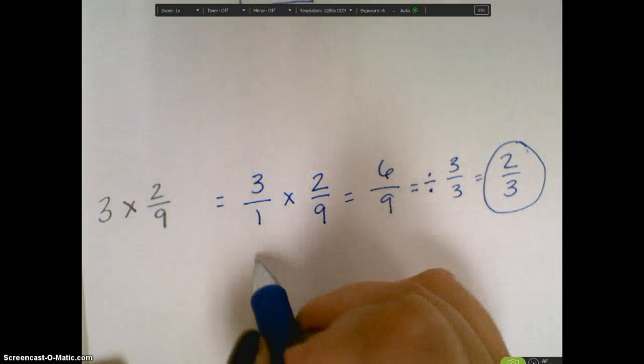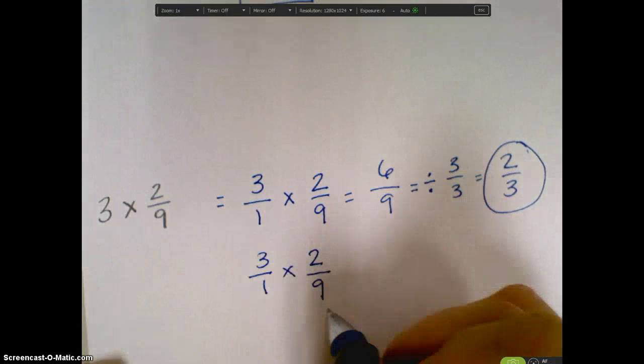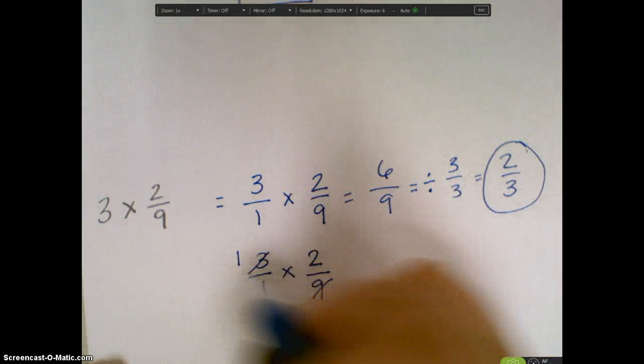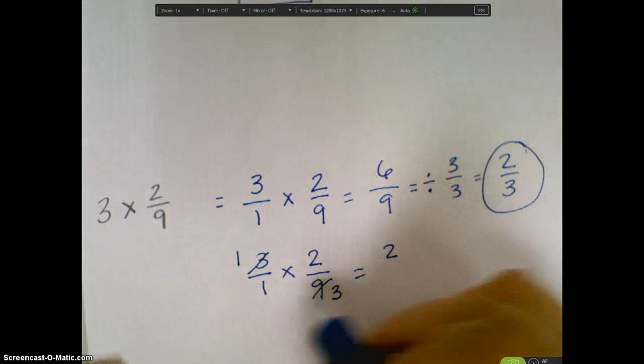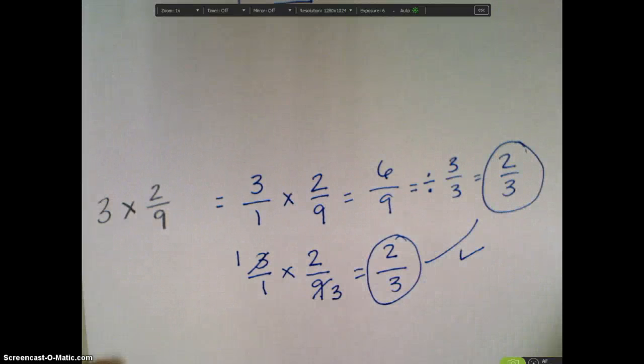The other way I can do that is I can do the cross cancel. So 3 over 1 times 2 over 9. I can cross out my 3 and my 9 and say 3 divided by 3 is 1, 9 divided by 3 is 3. Now I have 1 times 2 is 2, 1 times 3 is 3. Either way is fine. As you can see, you get the same answer both ways.